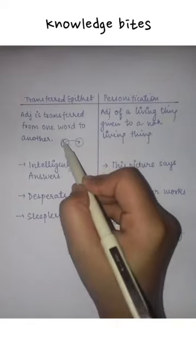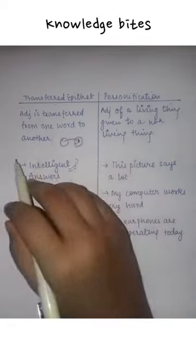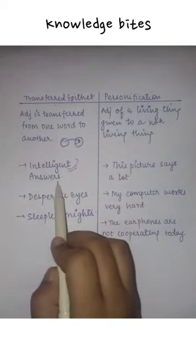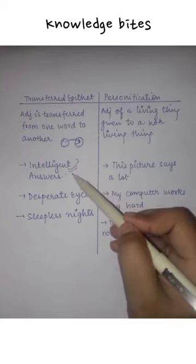Now, transferred epithet is the time when we transfer one feature, one adjective to another thing. Like, intelligent answers. The answers are not intelligent, but the person who is giving answers is intelligent.